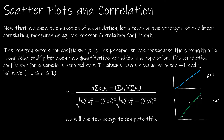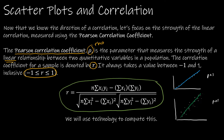We measure strength by something called the Pearson correlation coefficient, which is rho — a Greek letter. It measures the strength of the linear relationship between two quantitative variables in a population. When looking at a sample, we use r instead of rho. The value of the Pearson correlation coefficient always takes on a value between negative one and positive one inclusive — mathematically written as -1 ≤ r ≤ 1. There is a formula, but don't worry — there's an Excel function that will calculate it for you.